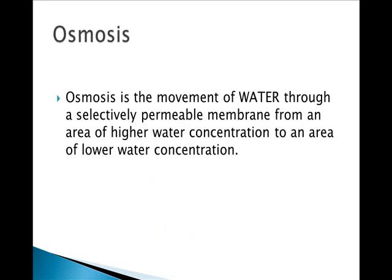When we talk about movement of water across a cell membrane, we refer to it as osmosis. This is a definition I want you to know almost word for word: it is the net movement of water through a selectively permeable membrane from an area of higher water concentration to an area of lower water concentration until equilibrium is reached. The term osmosis is only used when referring to water.